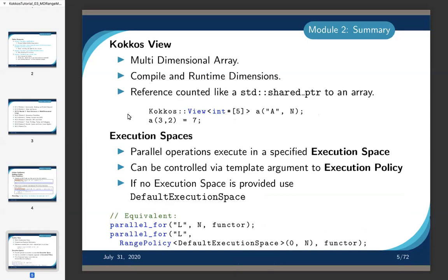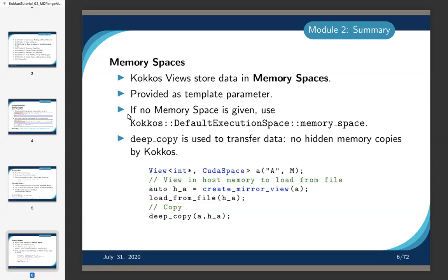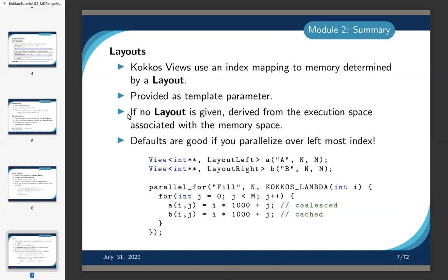In module two last week, we talked about Kokkos::View — how it's a multi-dimensional array with compile and runtime dimensions, and that it's a reference-counted data structure like a shared pointer. We talked about execution spaces and how they allow you to control where to execute code, including the default execution space. We also talked about memory spaces — how a view stores data in memory spaces that you can provide as a template parameter — and about deep copy and create_mirror_view to get a copy of a view on the host.